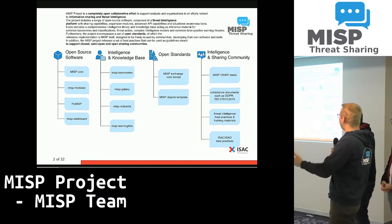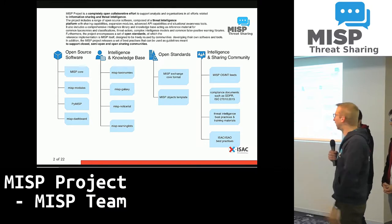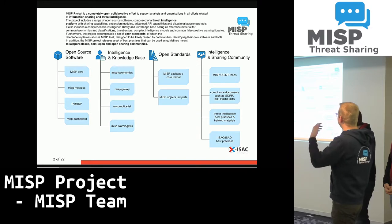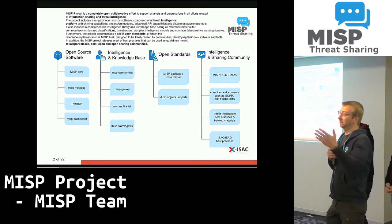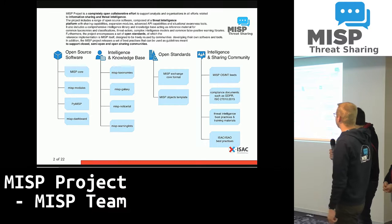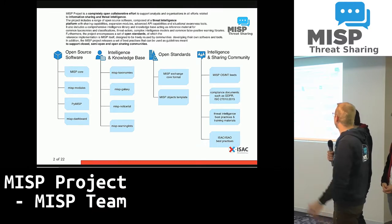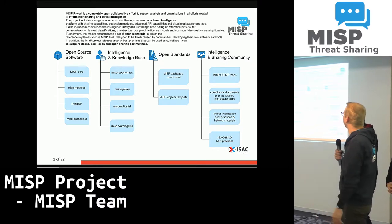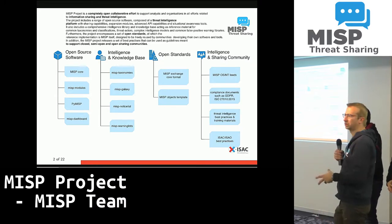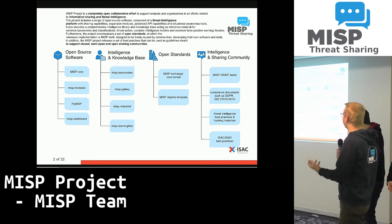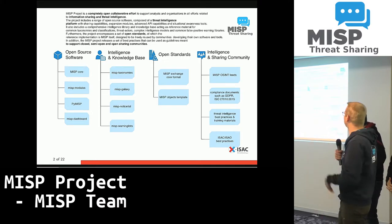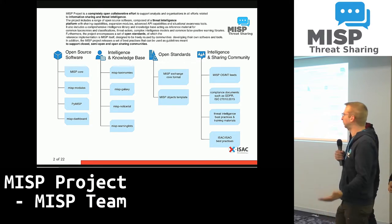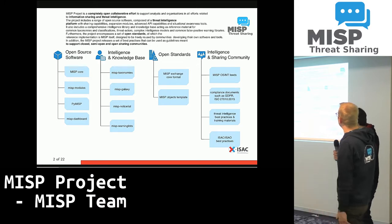On top of the software, this thing was growing over time — it became a knowledge and intelligence database, including warning lists for detecting false positives, lists of taxonomies, galaxies, and notice lists. That's part of the core project itself, but it's not software as such; it's basically a knowledge database that you can reuse. Initially it was just for us, but nowadays we've seen a lot of other software using it. In the past year, we did a lot of work and investment in that part.